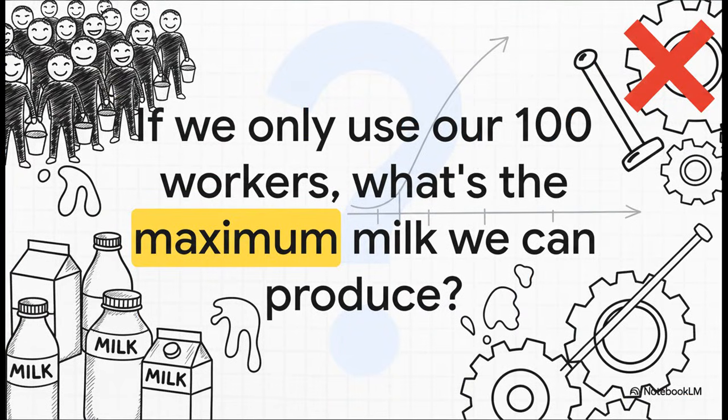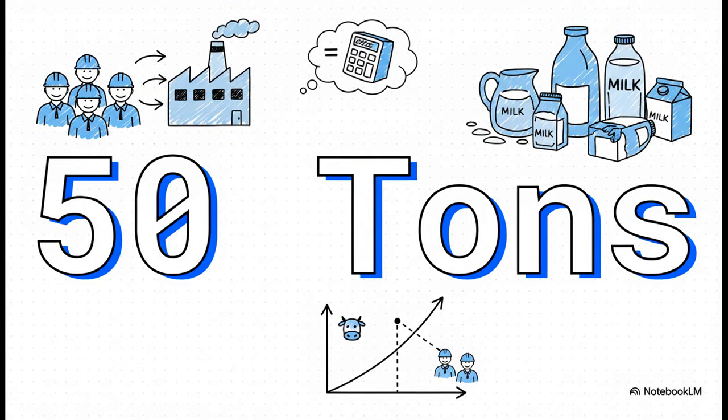Let's start with our labor force. If we put all 100 workers on milk production duty, and just for a second we completely ignore the machine limit, how much could they possibly make? Well, the math is pretty straightforward. 100 workers divided by the two workers it takes to make a ton of milk, that gives us a maximum of 50 tons. Simple as that.